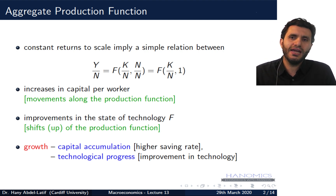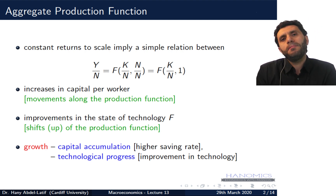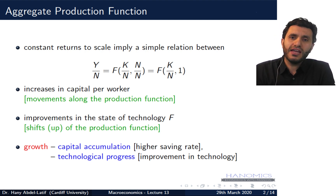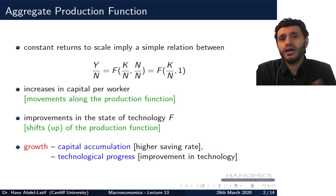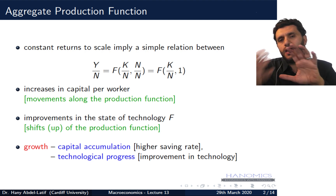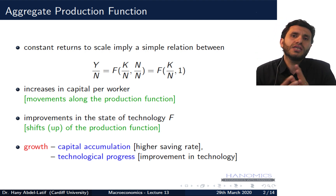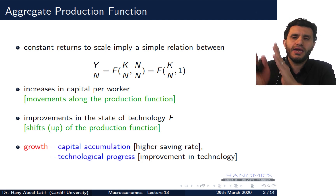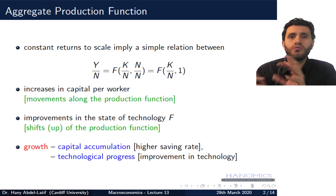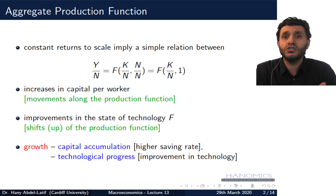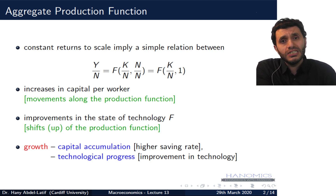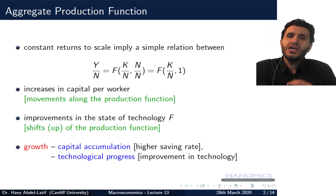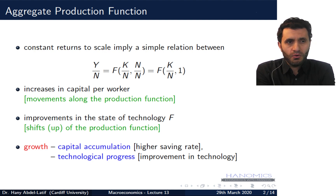Going back to the production function — we actually plotted it before when we derived the aggregate supply curve, showing how equilibrium in the labor market leads us to output via the production function. We've seen the production function before, but we need to revisit it today in more detail to explain what determines economic growth. Increases in capital per worker mean we're moving along the production function; a change in technology shifts the entire production function upward.